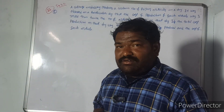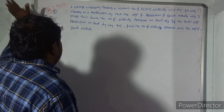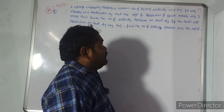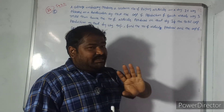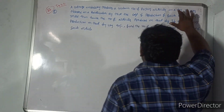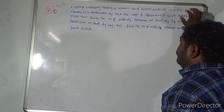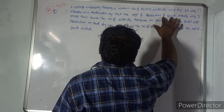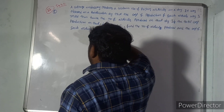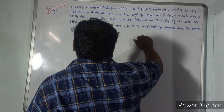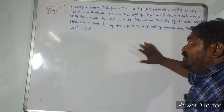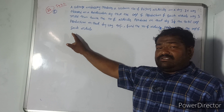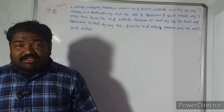The question is: a cottage industry produces a certain number of articles. It was observed on a particular day that the cost of production of each article was three more than twice the number of articles produced on that day. If the total cost of production on that day was 90 rupees, find the number of articles produced and the cost of each article.